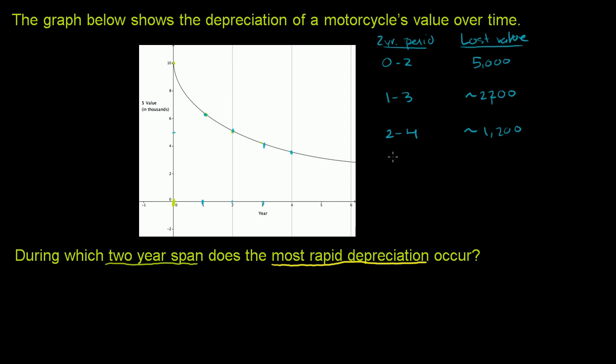And then if you go from year three to year five, we're going from about $4,000 to looks like about $3,600. If I had to eyeball it, so it looks like we lost about $400. So if anything, as we go further and further in time, each two-year period, we're losing less value.